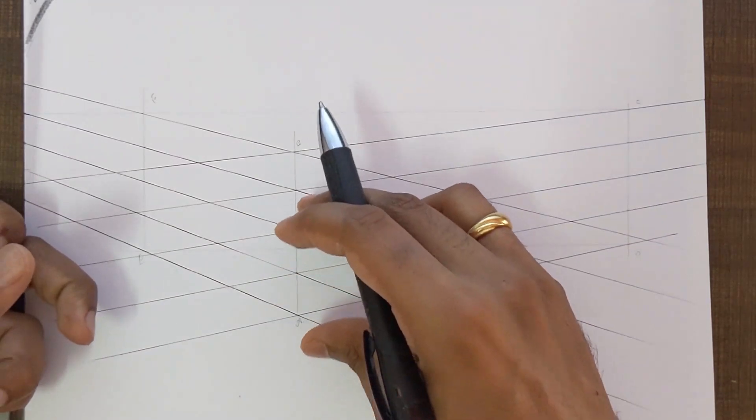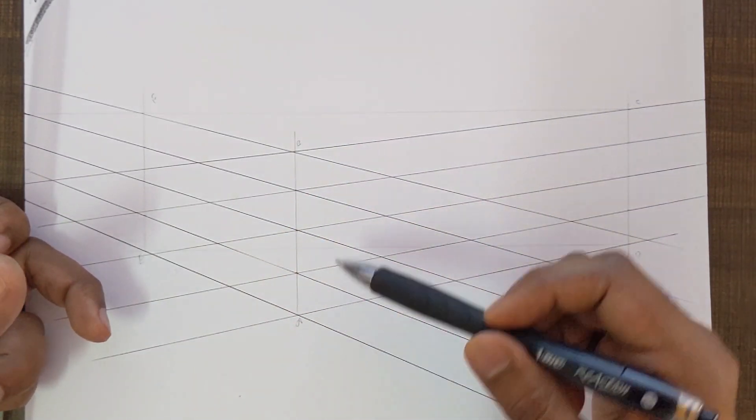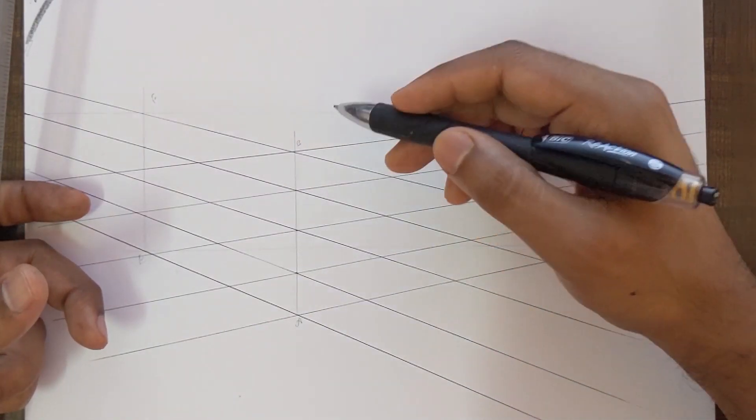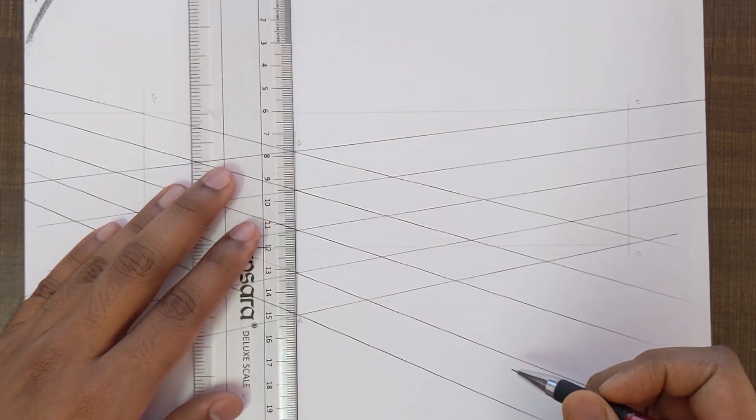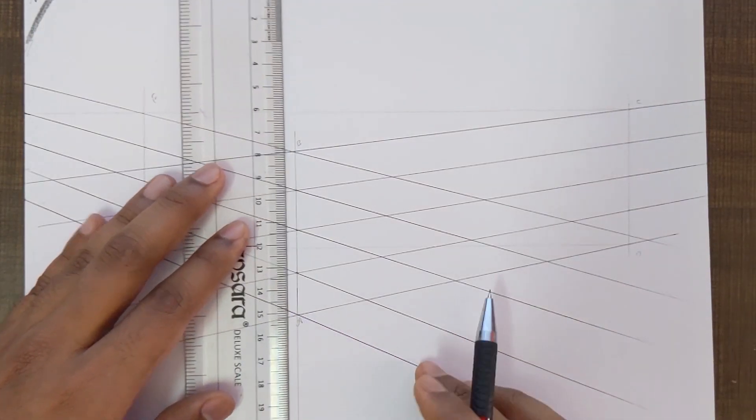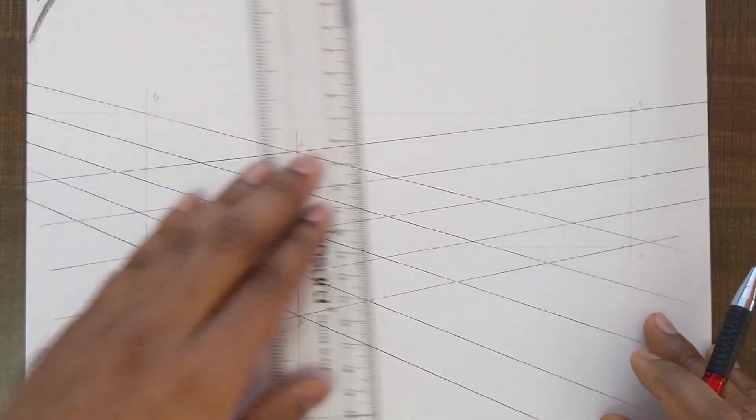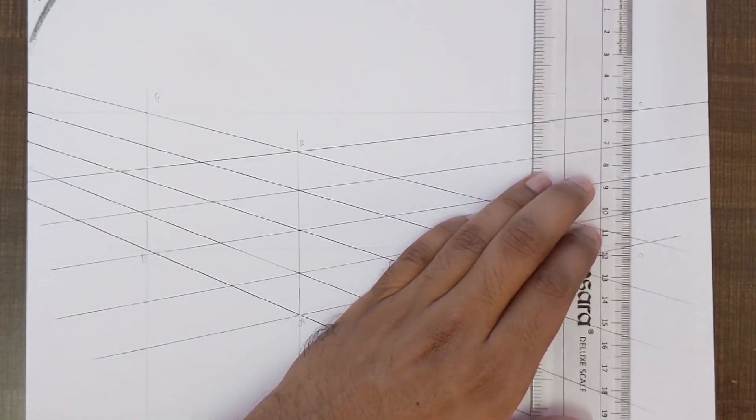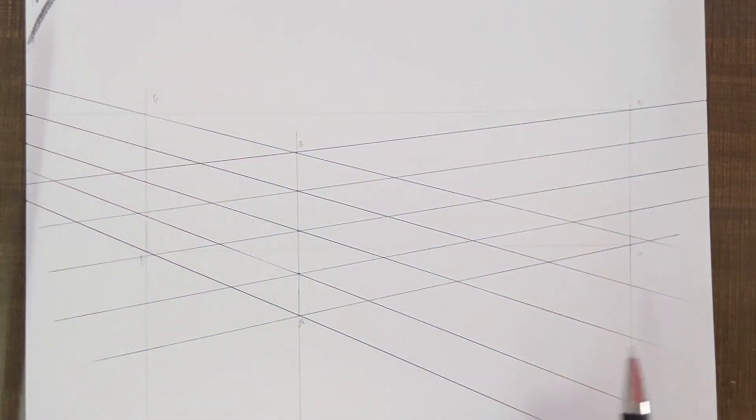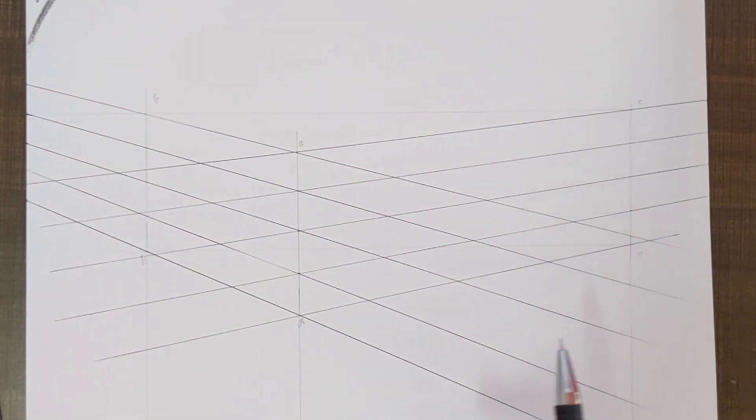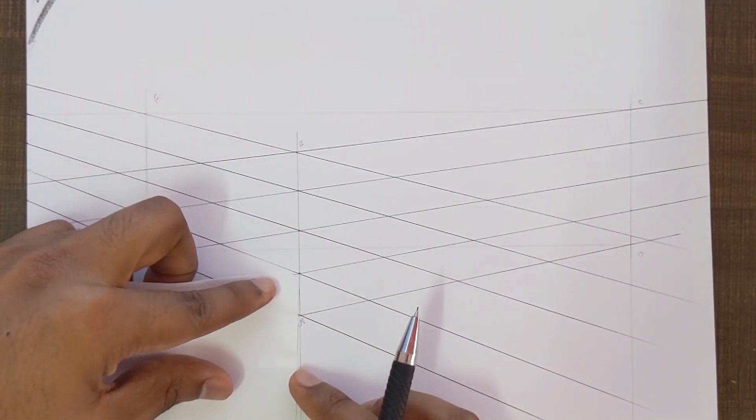Now if you want to extend this grid a bit down or towards the top, all we have to do is extend these vertical lines and take the same measurements.